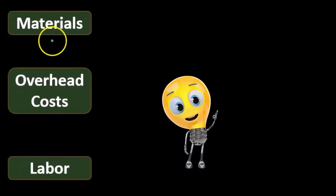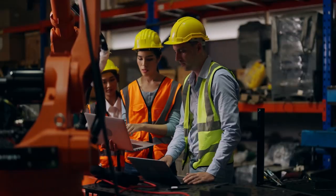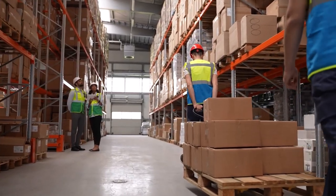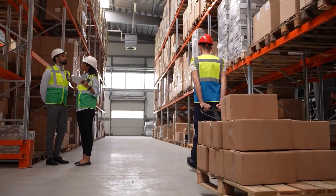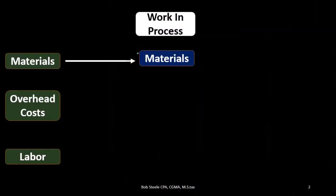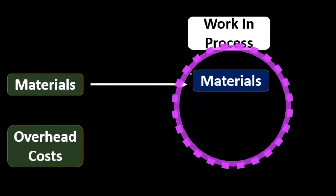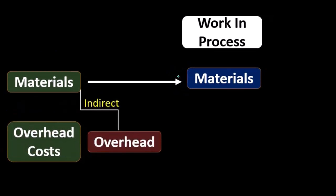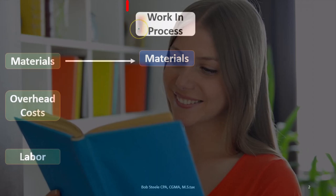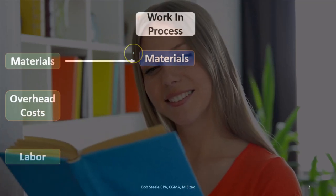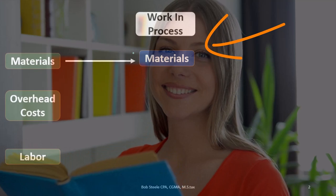Starting with materials, we will buy the materials — the plastic and whatnot — that are going to be used to create the TV. Those materials are part of inventory, and then as we start to work on them, we put them into what we call work in process. Work in process represents us starting to convert raw materials into the finished product. In a job cost system, we can't apply anything to the work in process account unless we can assign it to a specific job.